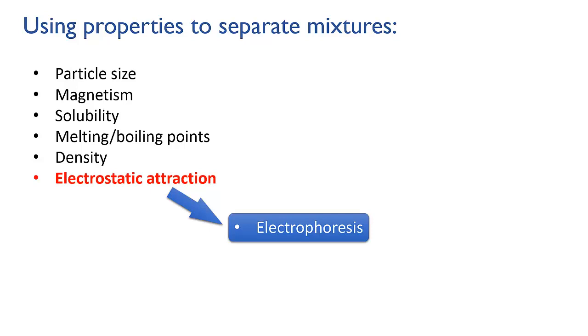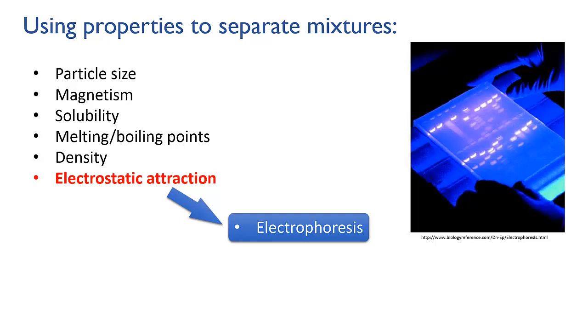More commonly though, scientists end up having to separate molecules that have the same charge. So you put the mixtures into a gel, turn on the electric field, and then the smallest molecules will move faster than the big ones, and so you get separation on the basis of size.